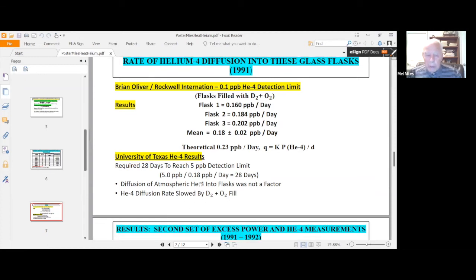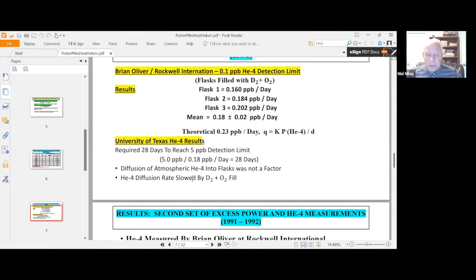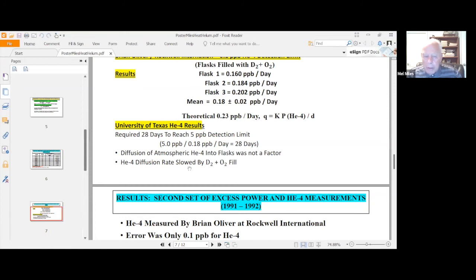The experiments did show that helium-4 is slowed down when the flask is filled with D2 plus O2, because D2 also diffuses through glass. So it's going in the opposite direction as the helium-4 coming in. And it seems logical that we slowed it down the helium-4 diffusion rate, which it does.